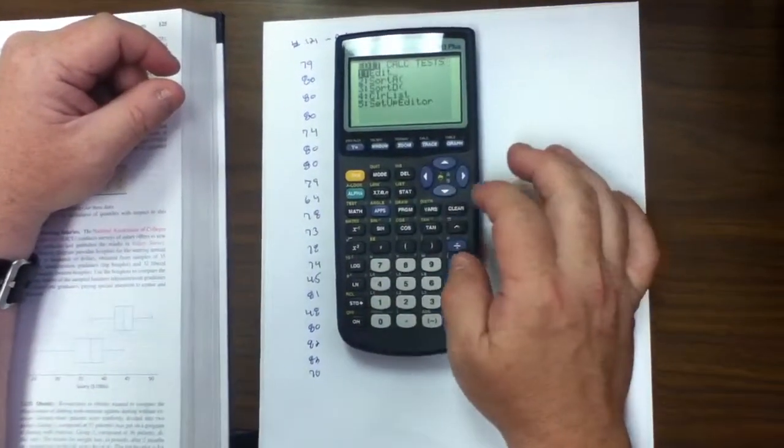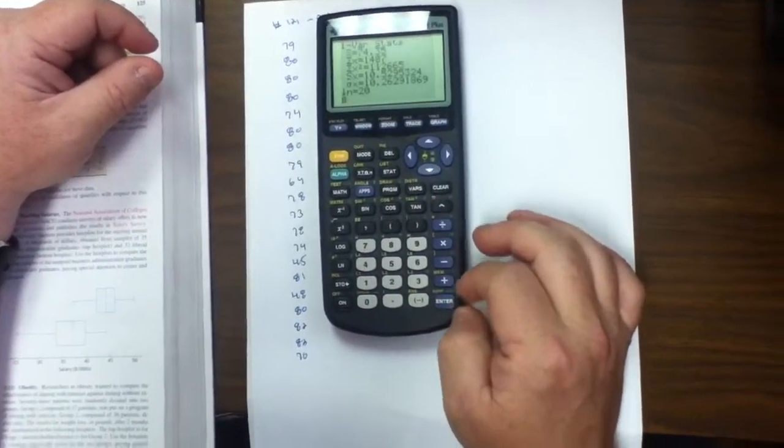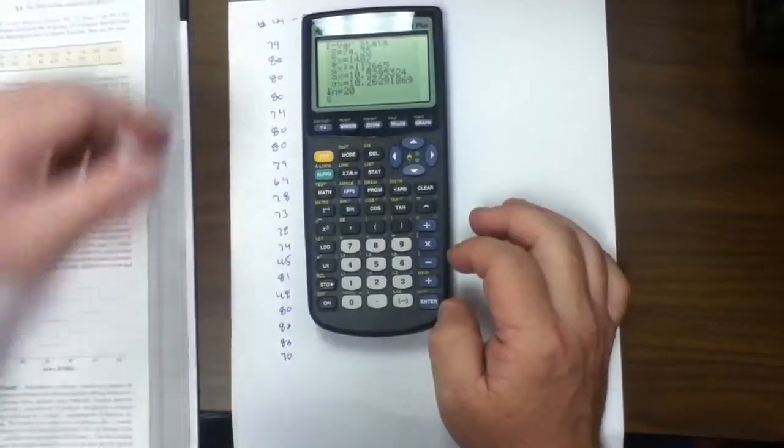Hit the stat button. Arrow over to calc. Select one. Hit enter. Again, this gives me X bar and all the information I need.